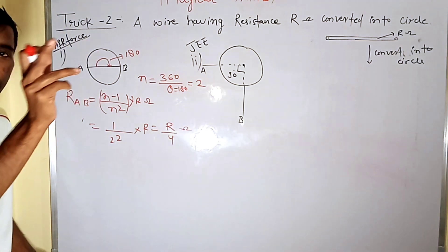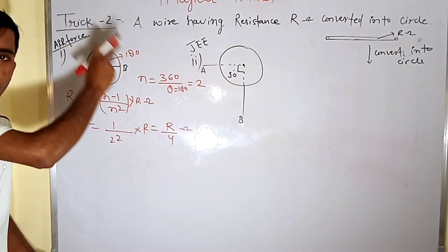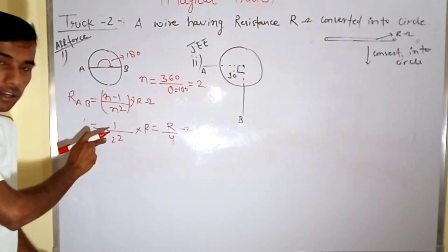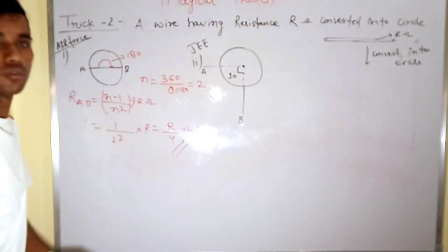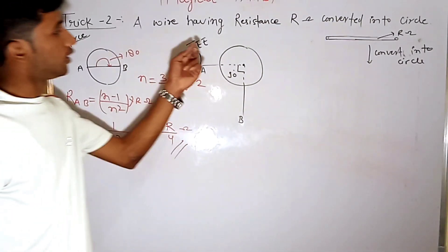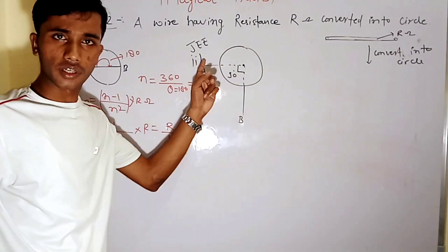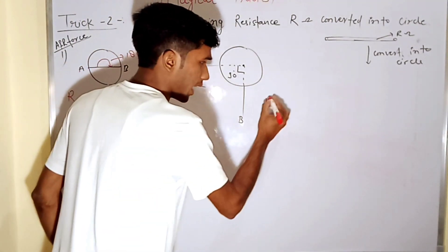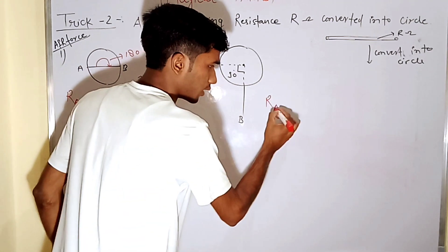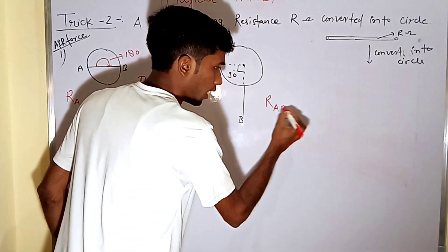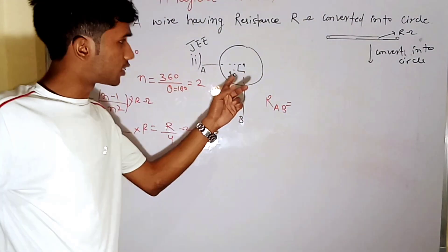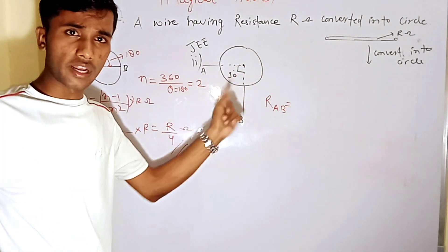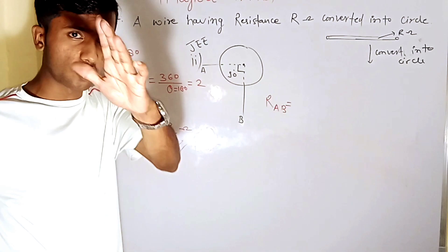In the first trick, the first type of question would use this same trick. Similarly, the second question is J-E. So here we have R-A-B. If you solve it in conventional methods, it will take 3 to 4 minutes. But you can solve it within a short time.